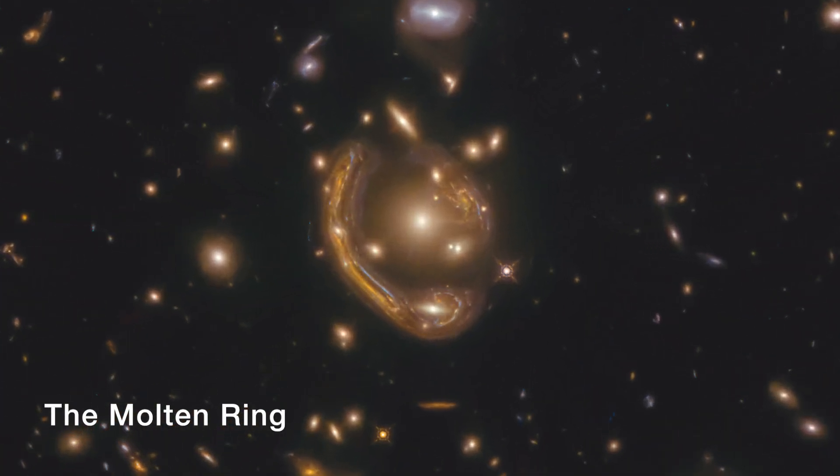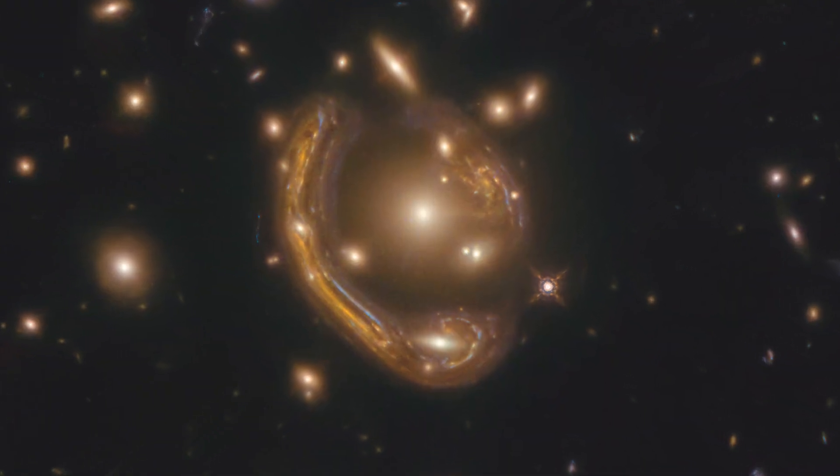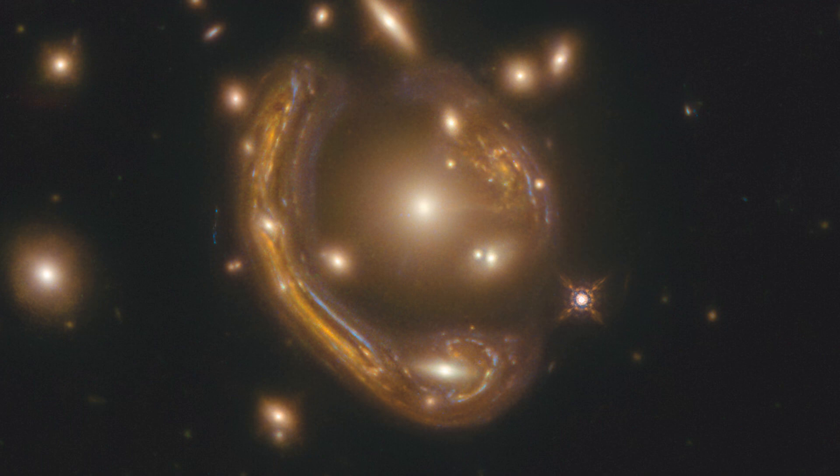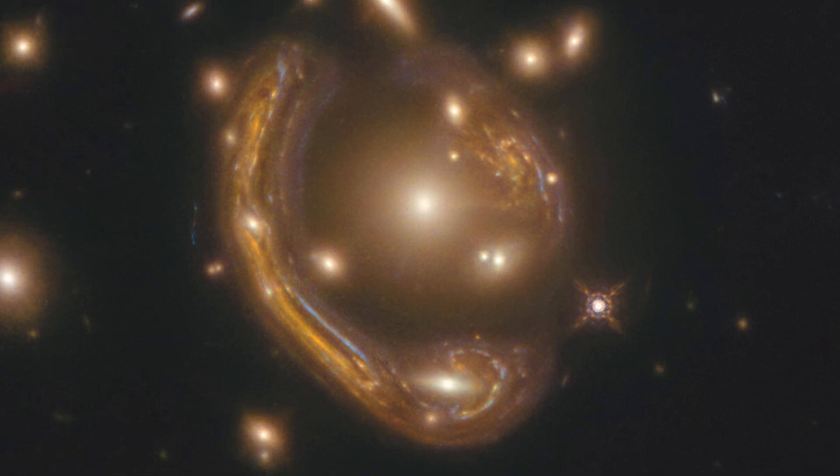A molten ring is a really interesting case where it's one of the largest galaxies that forms a near-complete Einstein ring. In the molten ring you have a very large cluster of galaxies that has magnified this background galaxy.